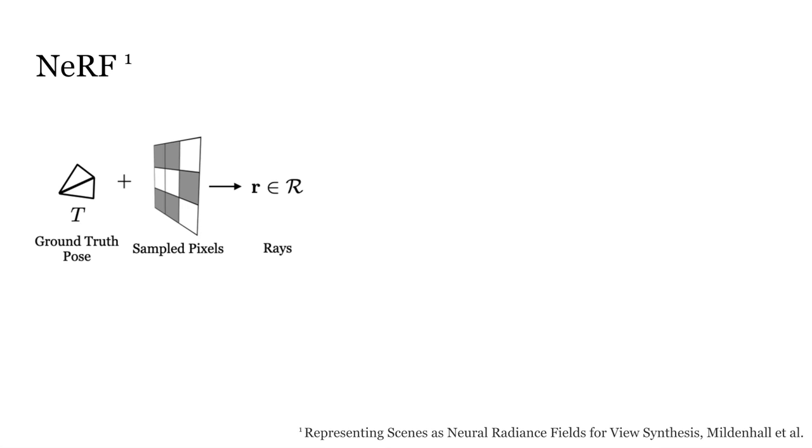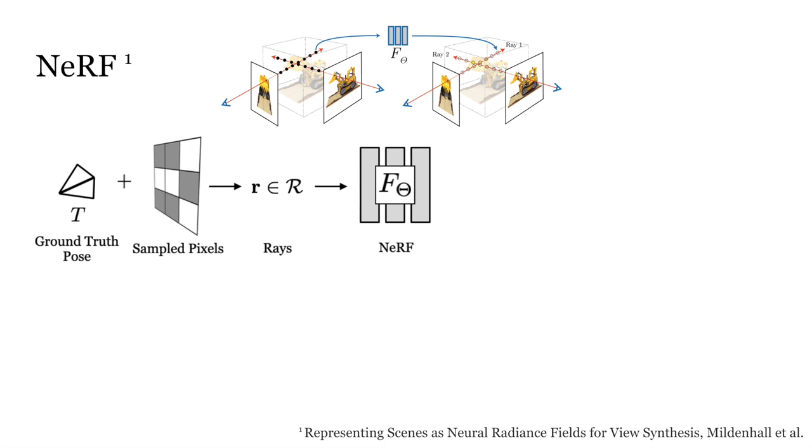NeRF performs reconstruction by taking in a set of images and the corresponding ground truth camera poses. First, it emits rays through pixels on an image plane. Along the rays, a set of points are sampled for use as input to the neural network F theta, which outputs a set of densities and colors. These values are then used to approximate the color of pixels using volume rendering.